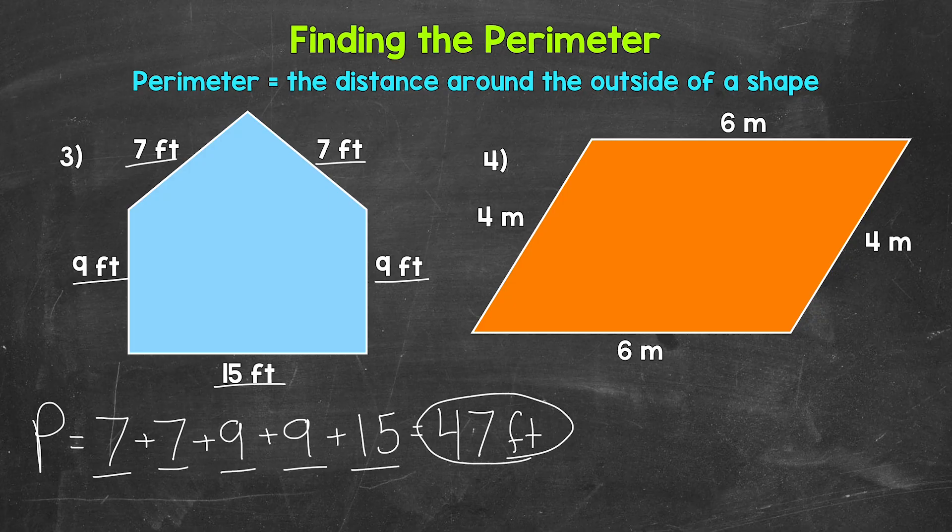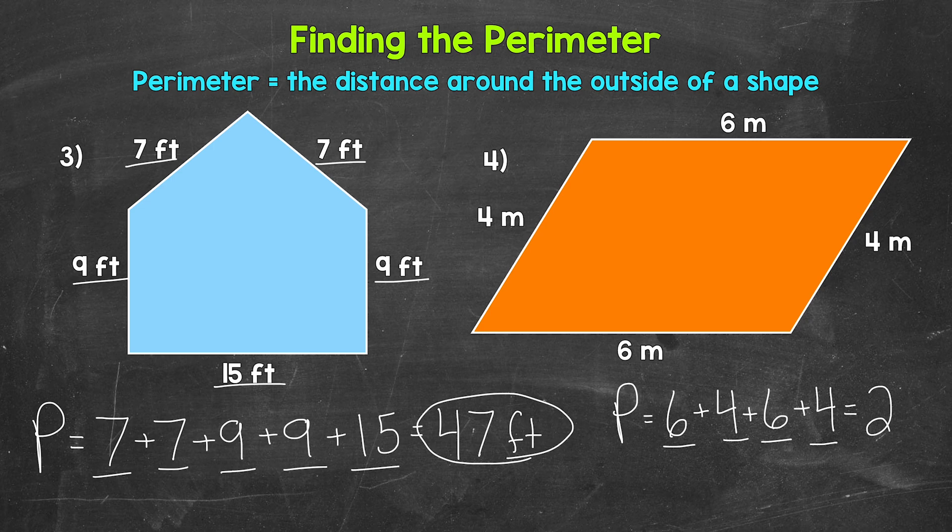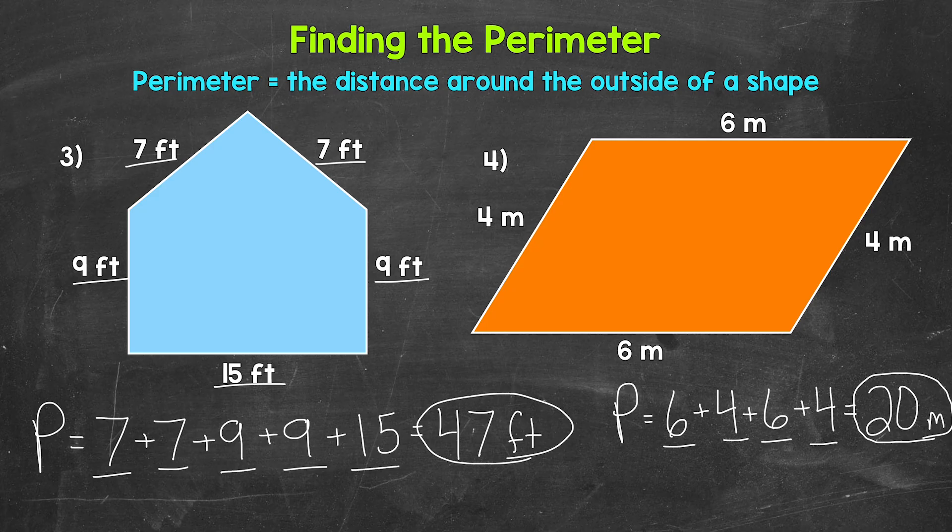Let's move on to number four, where we have a parallelogram here. So we need to add all four of these side lengths. So perimeter equals six meters plus four meters plus six meters plus four meters. Six plus four is 10 plus six is 16 plus four is 20 and this is meters. So the perimeter here, 20 meters.